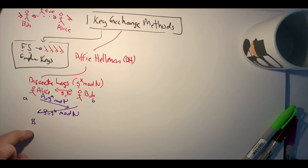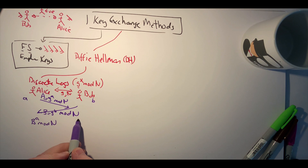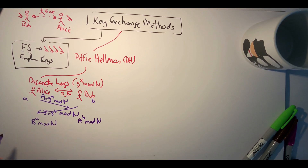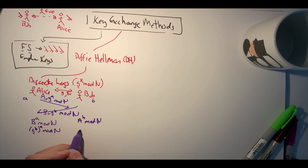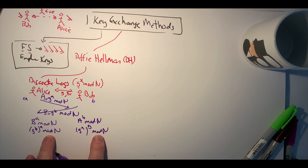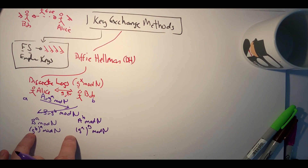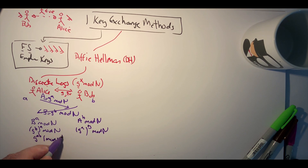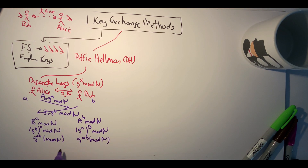Alice takes the value she received and raises it to the power of a mod n, and Bob takes Alice's value and raises it to the power of b mod n. Because of the properties of this operation, that becomes g^(ab) mod n by Napier's rule on logarithms. They then use an agreed key derivation function and end up with the same key on either side.